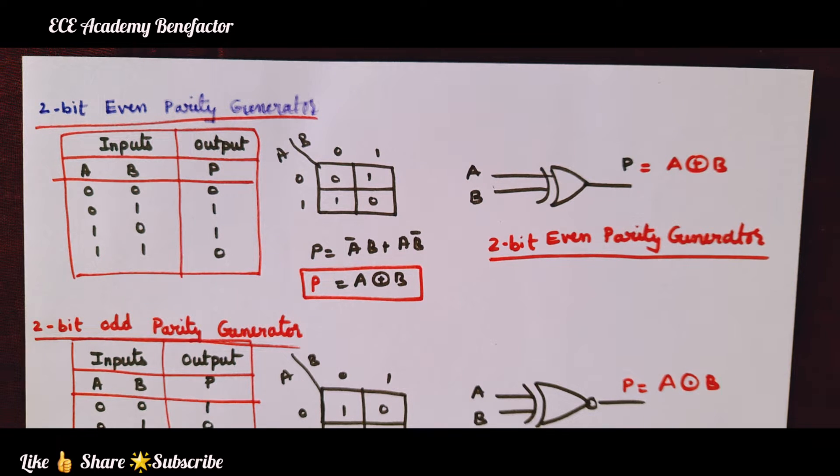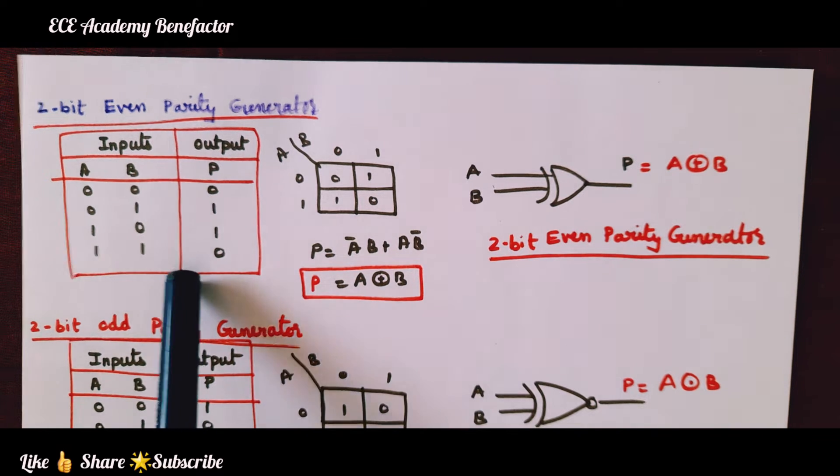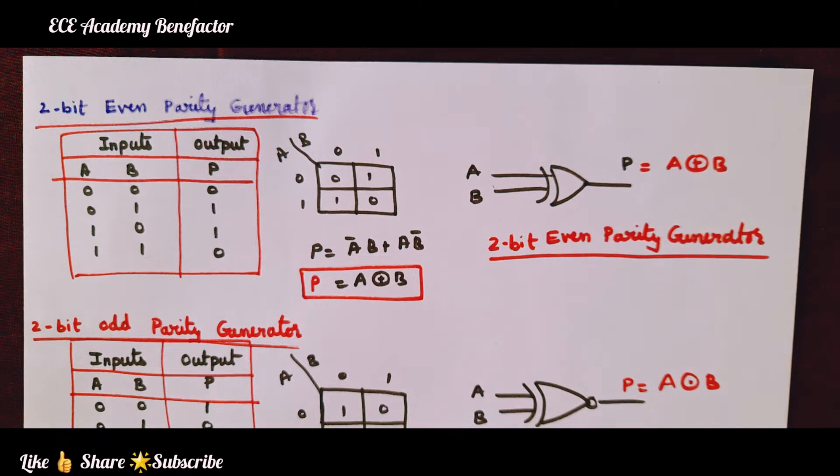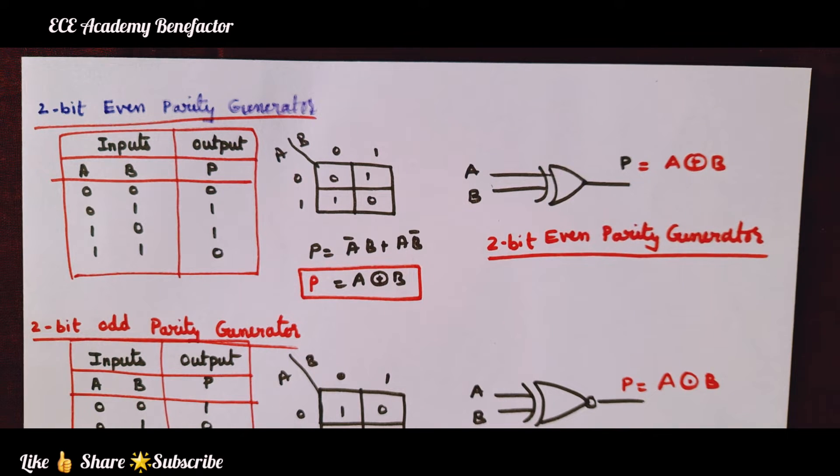In this class we will see how to implement it. What we require for it? Truth table, K-map simplification, and the logic diagram. This parity generator is a topic from combinational logic circuit. The subject name is digital electronics.